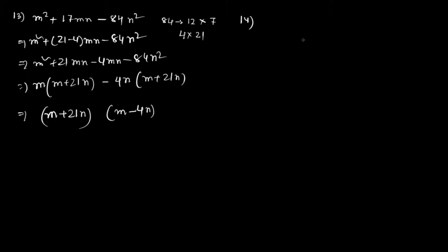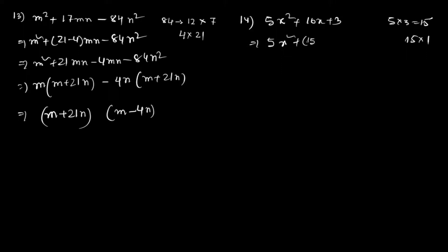Let's do the 14th one: 5x² + 16x + 3. So 5 times 3 is 15, and from 15 we must get 16, which means factors are 15 and 1. So we split it as 5x² + 15x + x + 3.